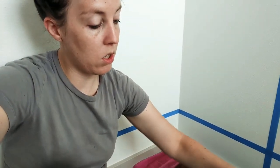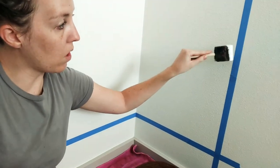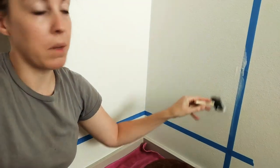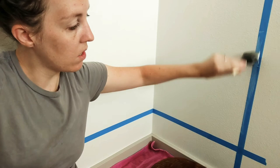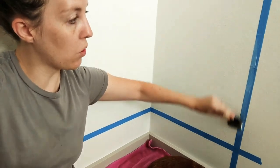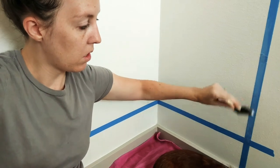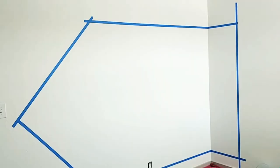So what you're gonna do is you're gonna take that and you're gonna go along all the edges of your blue tape like that. And it's gonna provide a seal so that when you put your regular paint on, you'll be able to pull the tape off and it'll have a nice crisp line. So let's go ahead and do that.